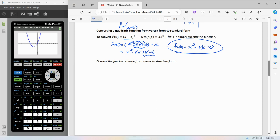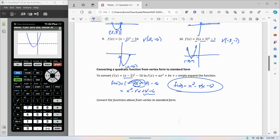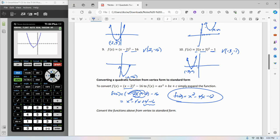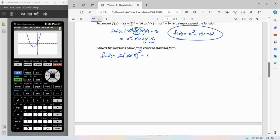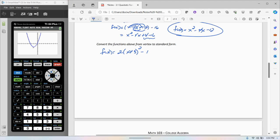I could go back and try, I'll do one more. But if I pull one of these from above, let's just say we have number 10. Number 10, f of x is equal to 2 times x plus 3 squared minus 1. If I want to convert that from the vertex form into the standard form,